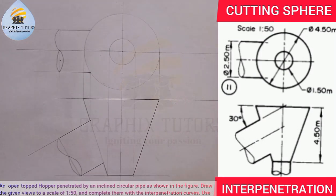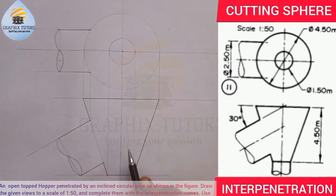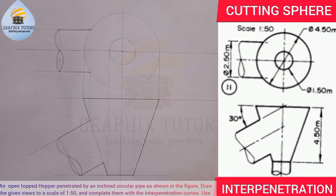We have successfully reproduced the figure displayed on the right-hand side of the screen. Now we want to draw the interpenetration curve, and the question says we should use the cutting sphere method. Previously we have been using cutting planes, but now we want to use the cutting sphere method.